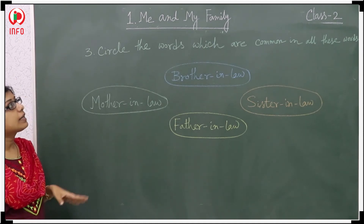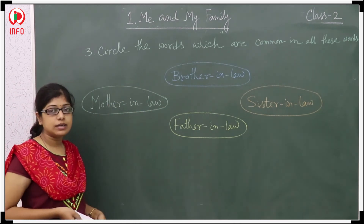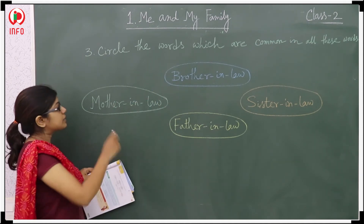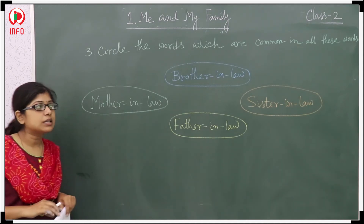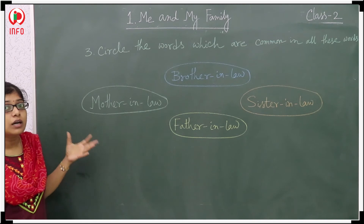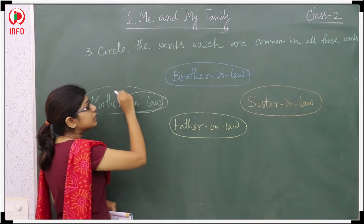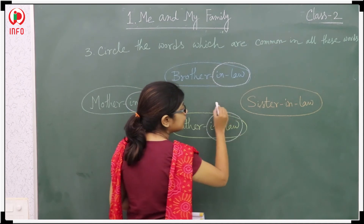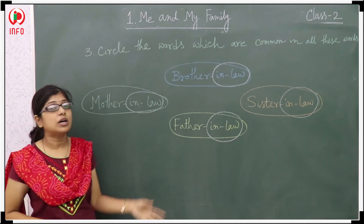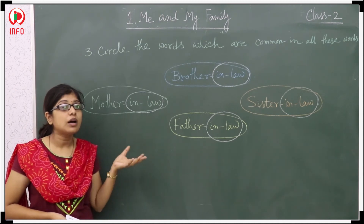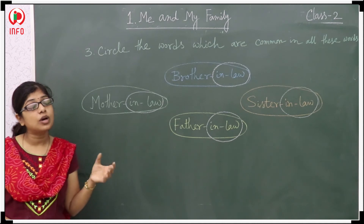Now see here the third project: collect the words which are common in all the words. Here four words are there — brother-in-law, mother-in-law, sister-in-law, and father-in-law. So what is common in all of these words? That one is 'in law.' Here in law, here also in law, here also in law, this one also in law. So 'in law' is common for all of the words. You have to find out this common word.